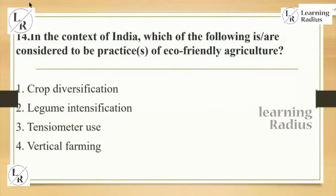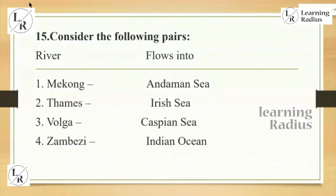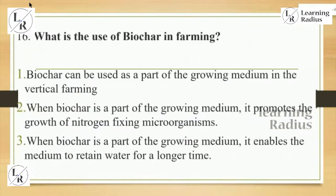In the context of India, which of the following is considered to be a practice of eco-friendly agriculture? This is a direct question from physical geography or agriculture. Options include crop diversification, legume intensification, tensio-meter use, and vertical farming. There was also an article related to vertical farming in the newspaper. The final question consists of matching rivers — McCombe, Thames, Volga, and Zambezi — with their respective seas or bodies of water including the Irish Sea, Caspian Sea, and Indian Ocean — a pure geography question.